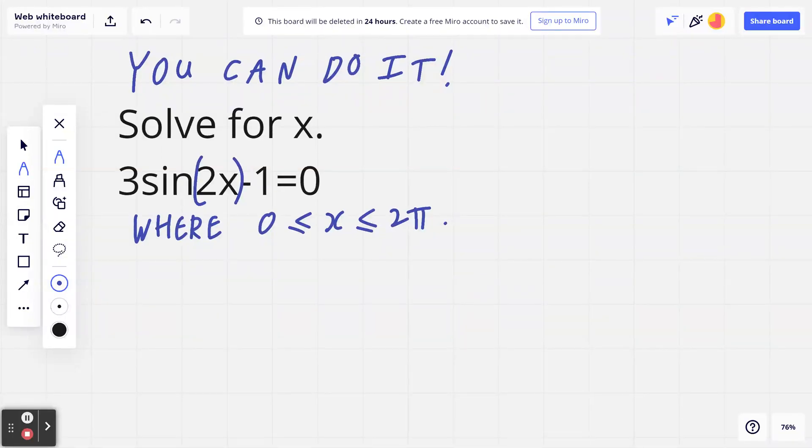Step number 1: if you think about 3 sine 2x minus 1 equals 0, you can bring negative 1 to the right-hand side.